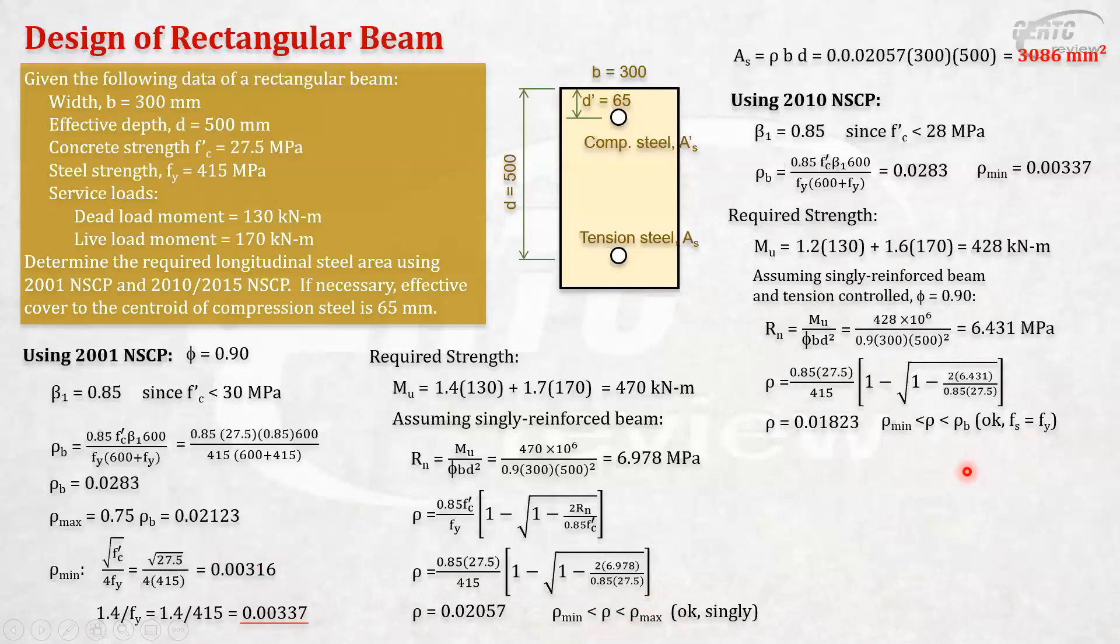So, what is left for us to prove here? We'll prove if this is really tension controlled. So, let's solve for fs. We'll see. Because to be tension control, the tension steel stress must be more than 1,000 MPa. Actually, the strain is 0.005, must be more than 0.005. So, equivalent stress must be more than or equal to 1,000 MPa. So, let's get A. Let's solve for AS first. This is our AS, rho BD. And then, let's get our A.